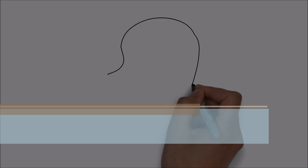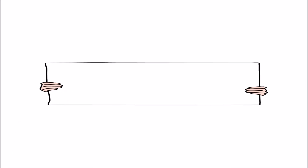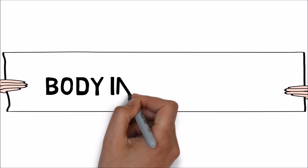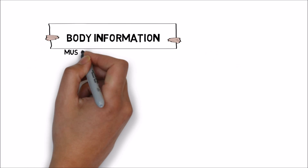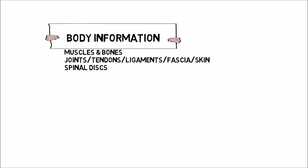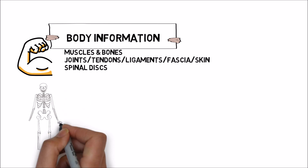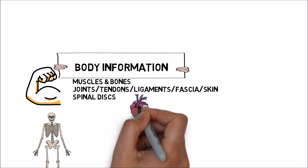Let's say that the outline of this drawing represents a person. Over here, we are going to list things that we call body or tissue information. Body information is probably the kind of information you're most familiar with. If you've had any health care before, you've heard about muscles, bones, joints, tendons, ligaments, fascia, skin, spinal discs, as well as blood vessels, your organs, and chemistry.